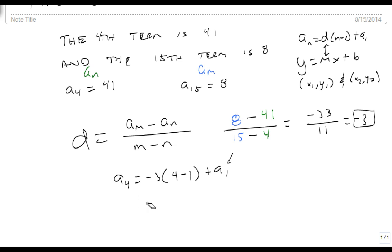which by the way, we know a4 is 41, so 41 equals minus 3 times 3 plus a1. 41 equals minus 9 plus a1. So 50 equals a1, and I now know my first term